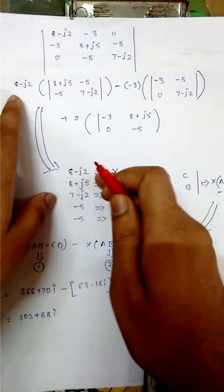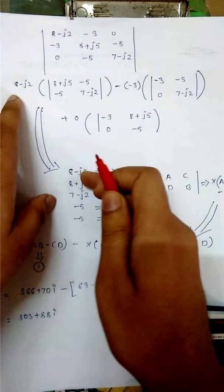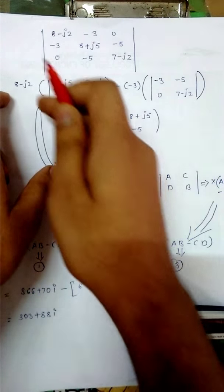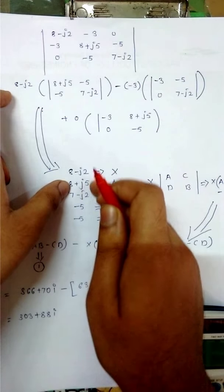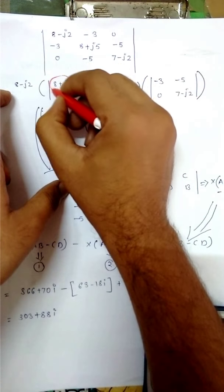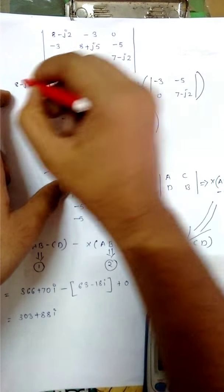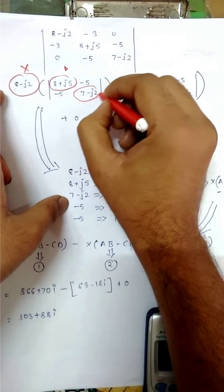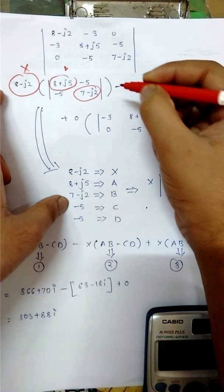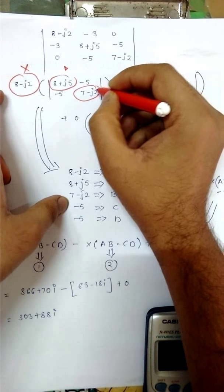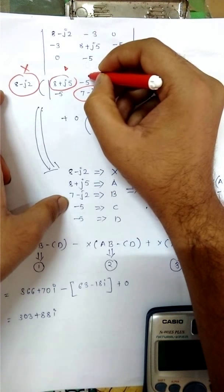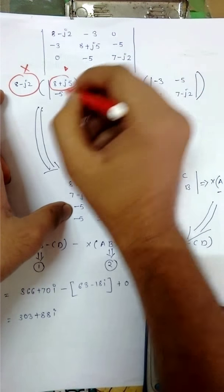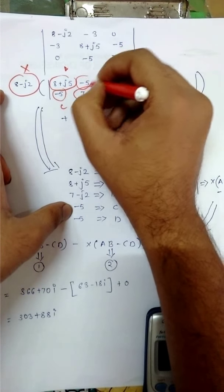You can assume this term. In this term I have assumed 8 minus j2 as x, 8 plus j5 this term as a, and 7 minus j2 is a complex term, that's why I have as b. This is c and this is d.